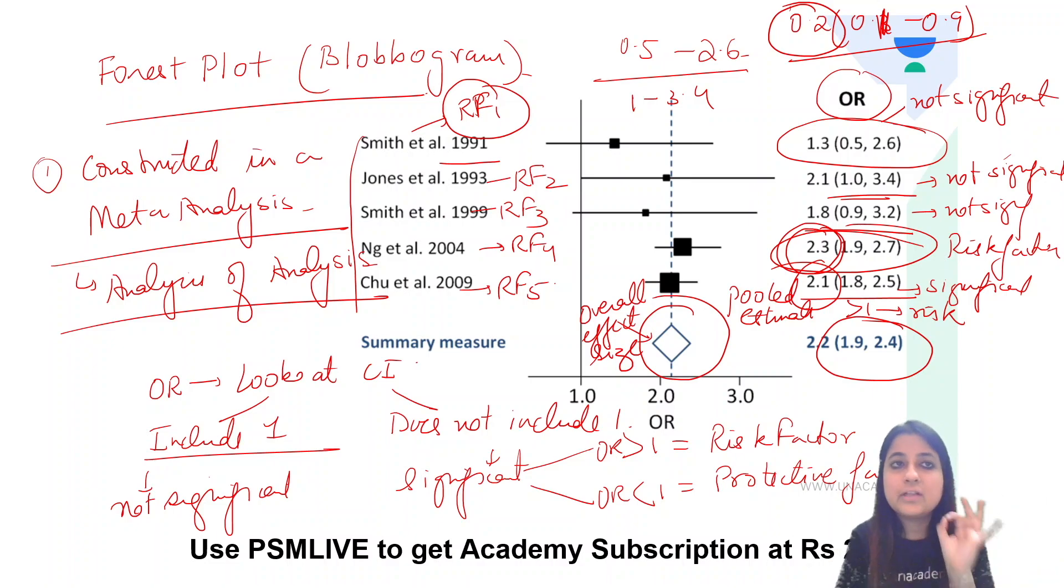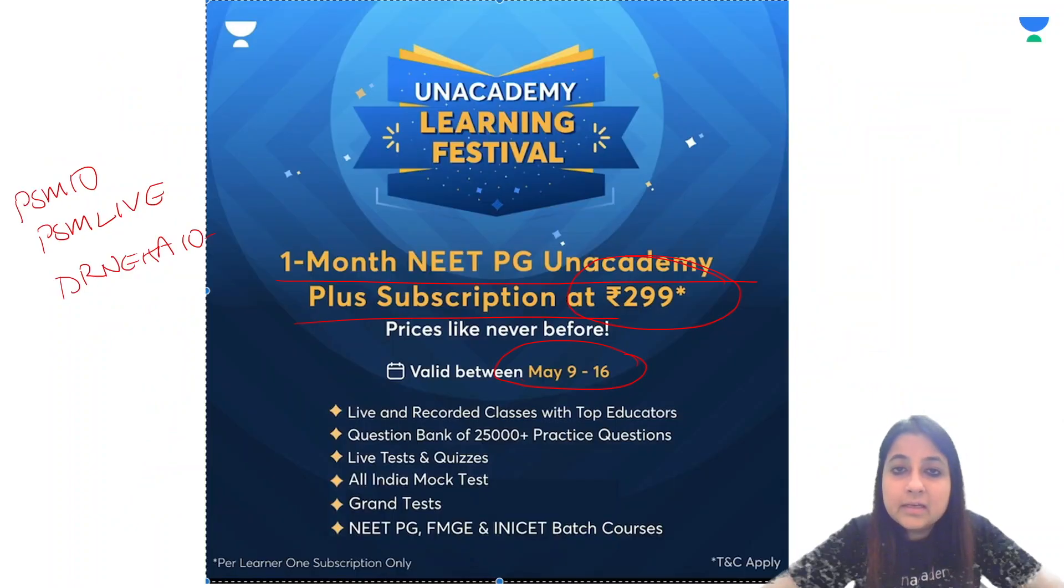What are the points you will remember? First of all, this is a forest plot. It is only drawn for a meta-analysis. It shows the overall effect size or the pooled estimate. It is used for analysis of analysis. Then when you study the individual study designs, if one is not included, it is significant. But if one is included, it is not significant. Then you look at whether the value is more than 1 or less than 1. If it is more than 1, it is a risk factor. If it is less than 1, it is a protective factor.